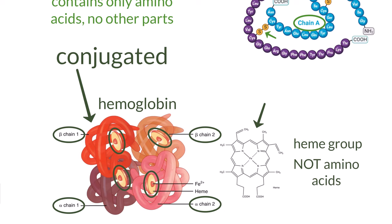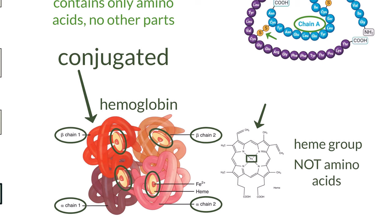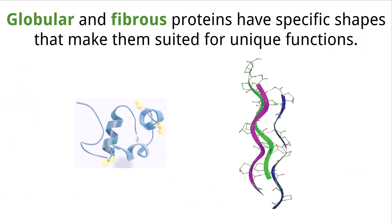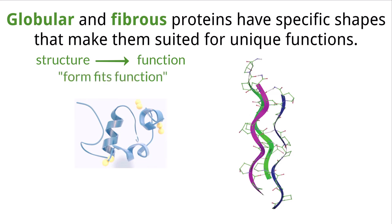This heme group, which contains a central iron atom, helps it perform its function of picking up and transporting oxygen around the body. As we have been discussing throughout this entire video, the structure of a protein is very important in determining how that protein functions. To put this in plain words seen in most biology textbooks: form fits function.